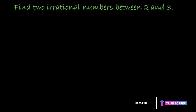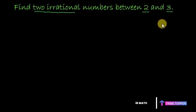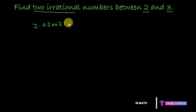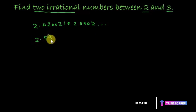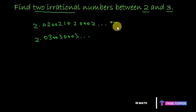After learning how to find rational numbers, let's move to finding irrational numbers between any two given numbers. Find two irrational numbers between two and three. For that, we can think of any number which is non-terminating and non-repeating decimal. For example: two point zero two zero zero two one zero two zero zero zero two, continuing endlessly, or two point zero three zero zero three zero zero zero zero three — nothing repeats in a particular order. These non-terminating and non-repeating decimals are two irrational numbers between two and three.